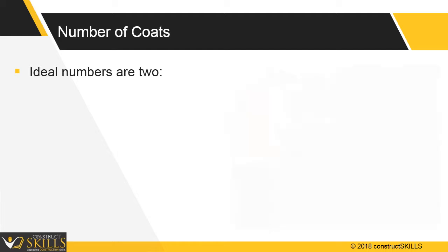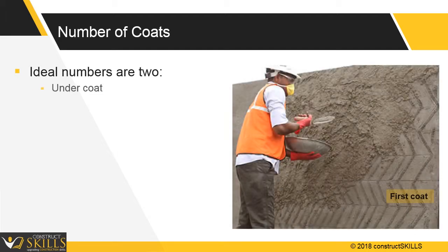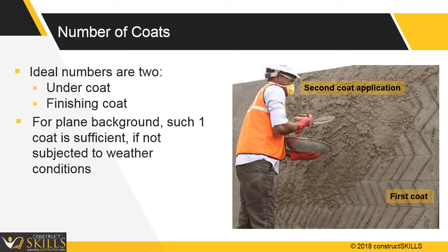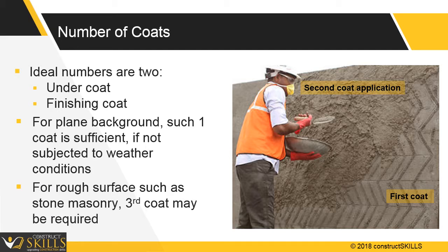The ideal number of plaster coats are two: namely an undercoat followed by a finishing coat. For plain backgrounds of bricks or AAC blocks, one coat is sufficient if the background is not subjected to weather conditions. For rough surfaces such as stone masonry, a third coat may be required.